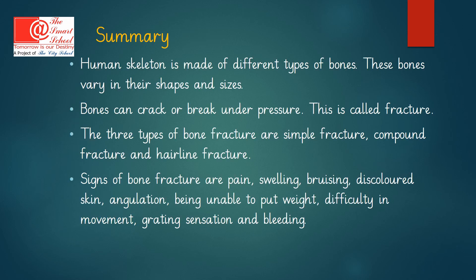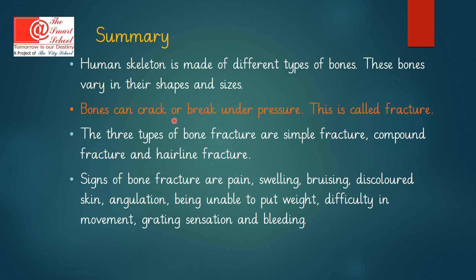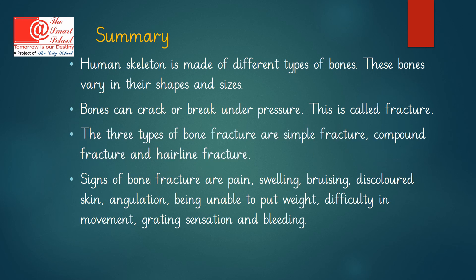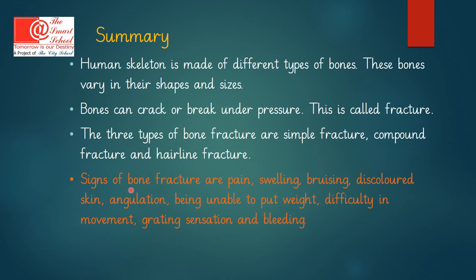Let's summarize what we studied in this lesson. The human skeleton is made of different types of bones that vary in their shapes and sizes. Bones can crack or break under pressure — this is called a Fracture. The three types of bone fractures are Simple Fracture, Compound Fracture, and Hairline Fracture. The signs of bone fracture are pain, swelling, bruising, discoloured skin, angulation, being unable to put weight on the affected area, difficulty in movement, and grating sensation. Any of these signs may indicate bone fracture.